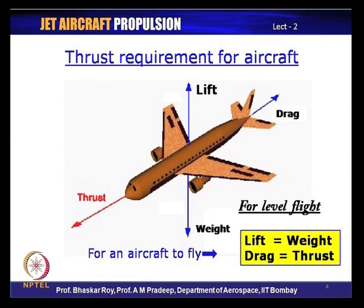Let us take a quick look at what happens when an aircraft is flying. When an aircraft flies, the first requirement is that its weight is balanced, and this balance is created by the lift generated by the shape of the body of the aircraft. Typically the shape of the wing is created to balance the weight of the aircraft. This lift creation depends on the motion of the aircraft — fairly high forward velocity is required to create lift.